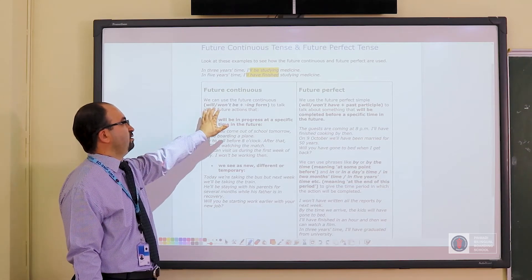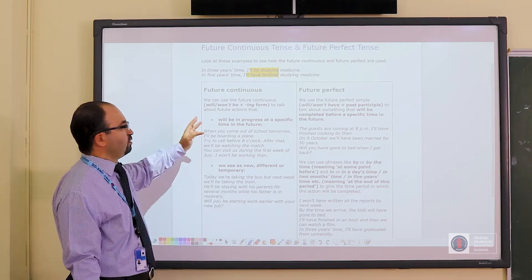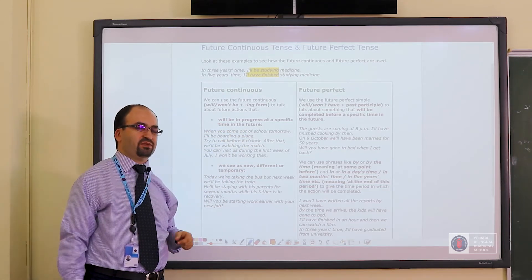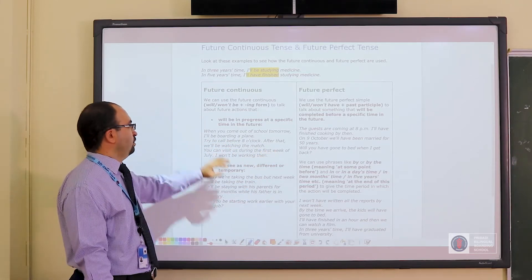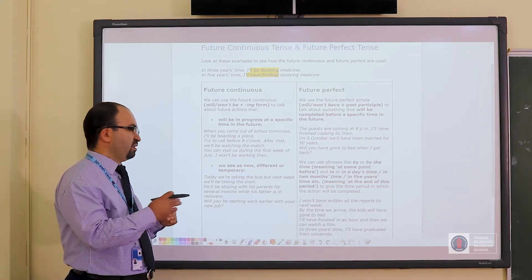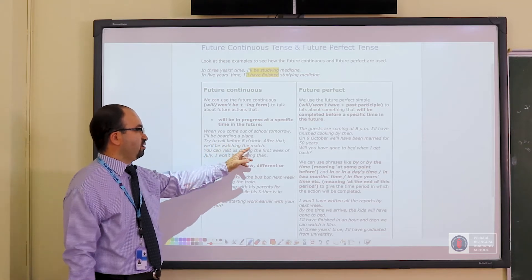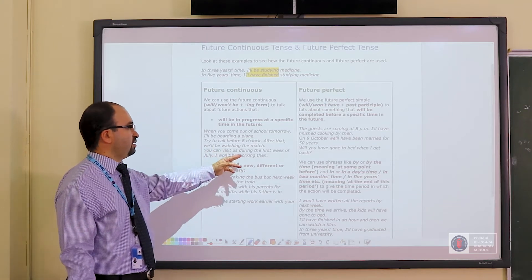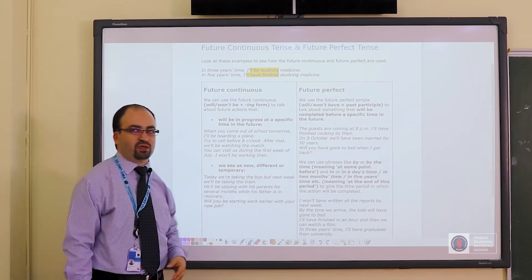Just as I said, the structure will be will and won't be plus ing form. When do we use it? When something will be in progress at a specific time in the future. When you come out of school tomorrow, I'll be boarding a plane. So right at that time, it will be happening. Try to call before 8 o'clock. After that, we'll be watching the match. You can visit us during the first week of July. I won't be working then.